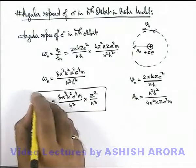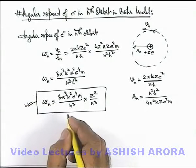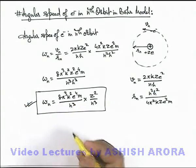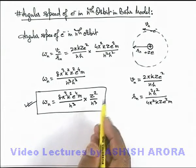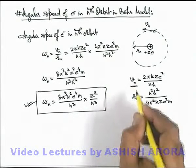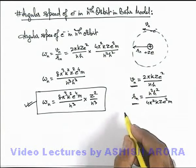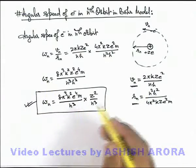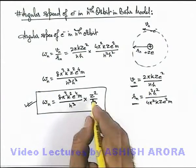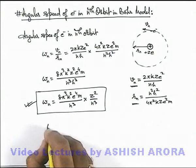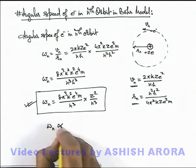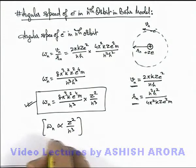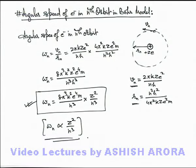This result you must keep in mind. Numerically, you don't need to remember all the values — if you are able to just remember the values of v_n and r_n, you can calculate omega numerically anytime. But the important thing to keep in mind is that omega_n is directly proportional to Z² / n³, based on which many numerical applications can be developed.